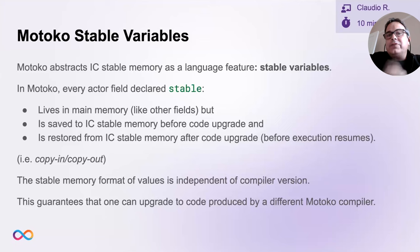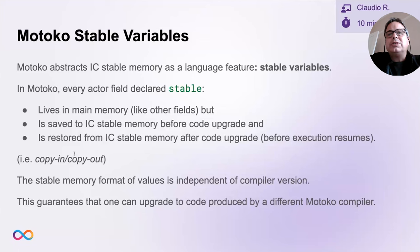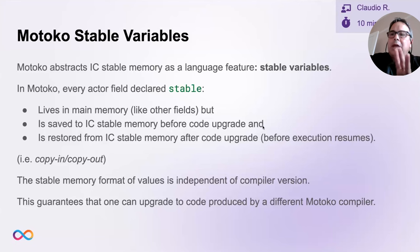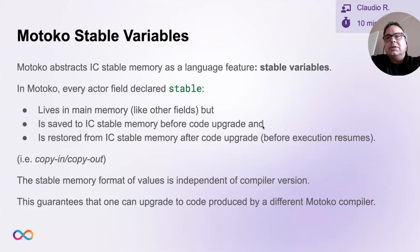It's a very simple mechanism for transferring data from old version to new. But it involves a copy-in, copy-out step where data transfers from main memory into stable memory and then back out again. An important thing is the stable memory format of these values is independent of compiler version, meaning we can upgrade to code produced by a different Motoko compiler, which might use a different in-memory representation of values.